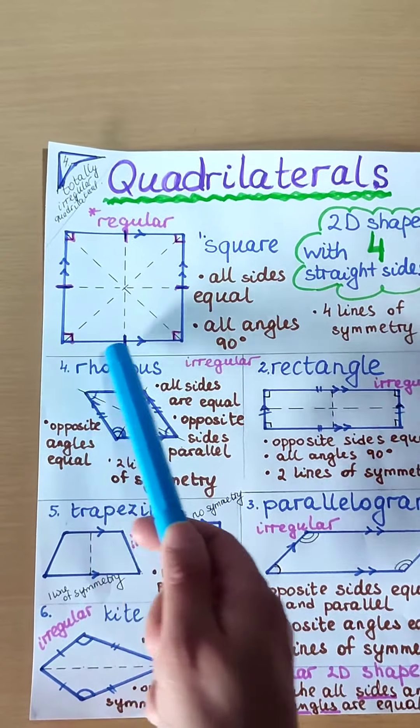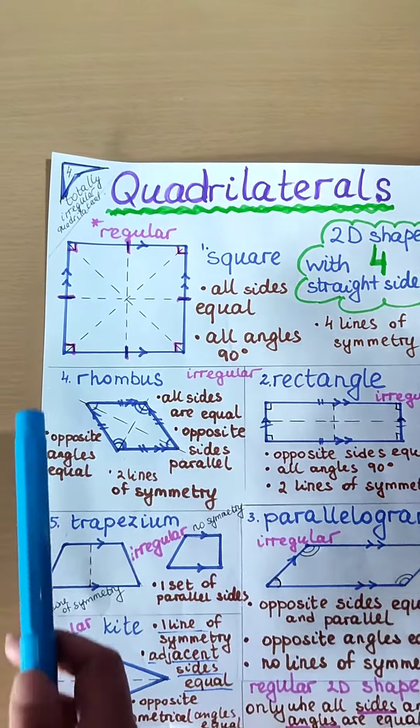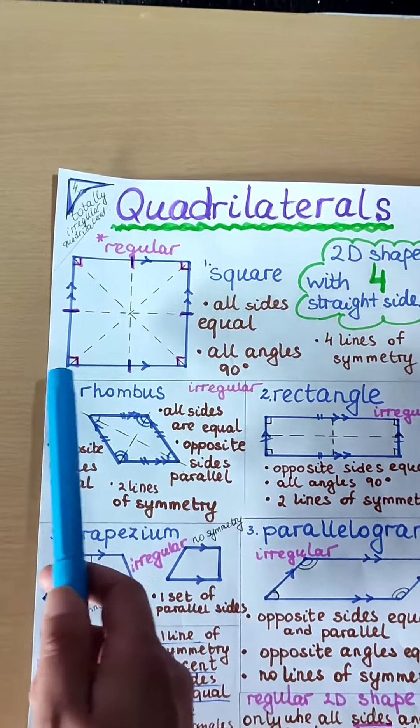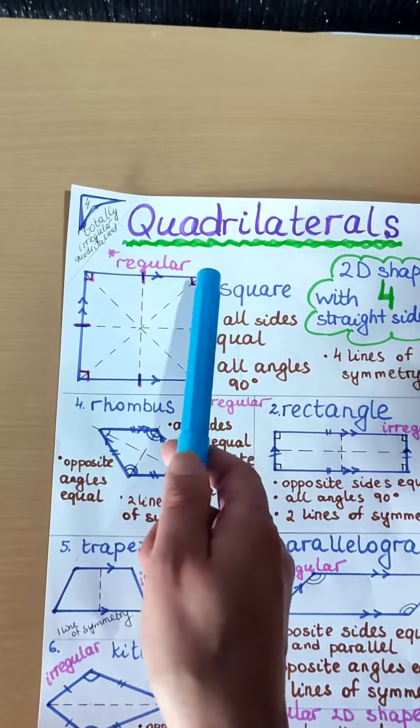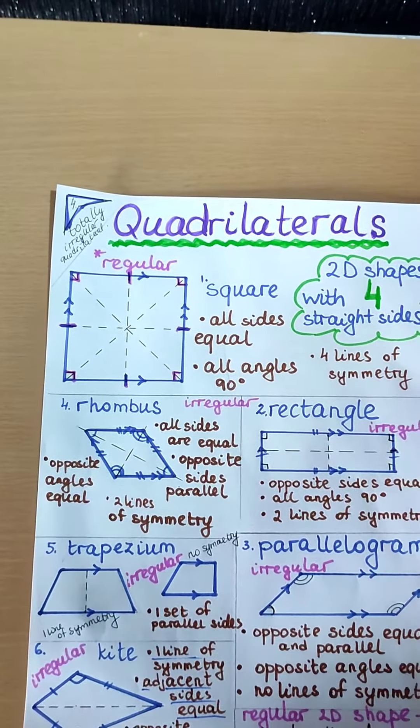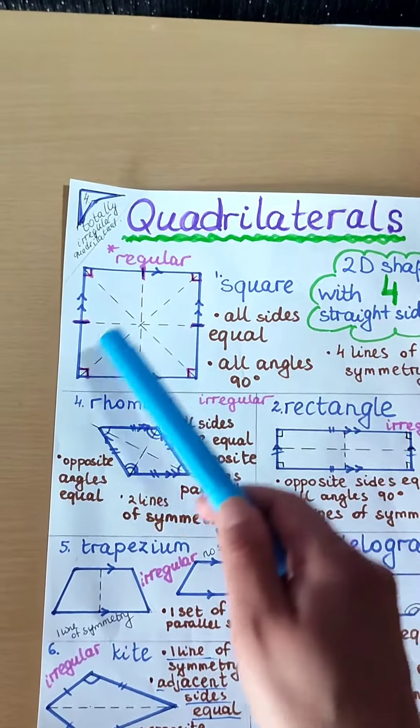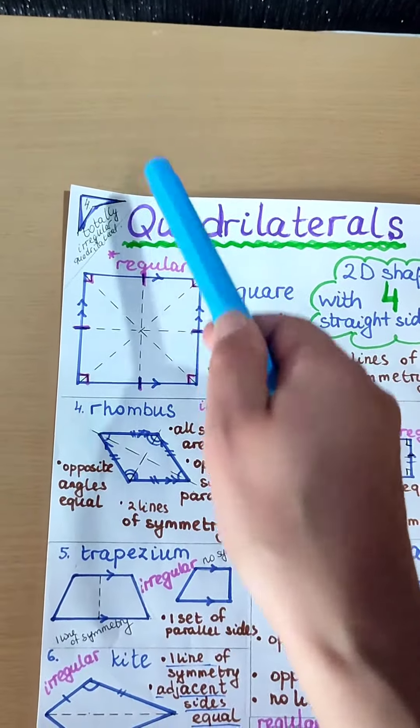This is a square. Square has all the sides which are the same and all of the angles which are the same, and they're 90 degrees. Square has 4 lines of symmetry.